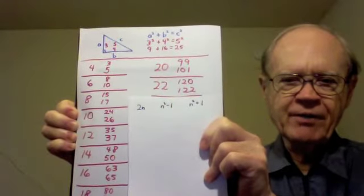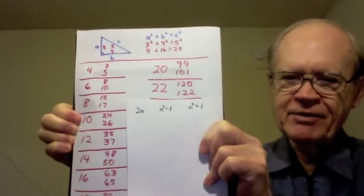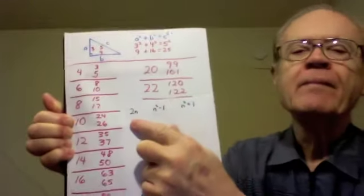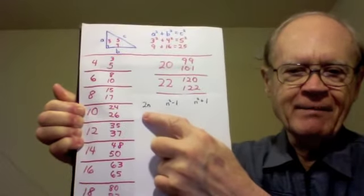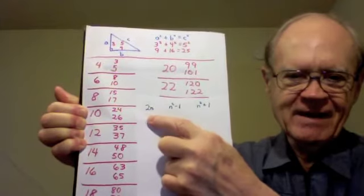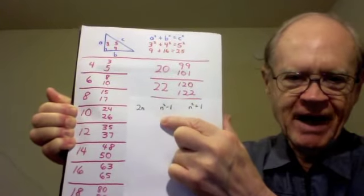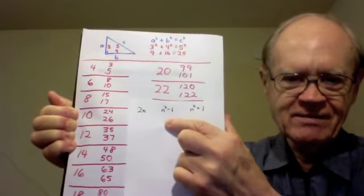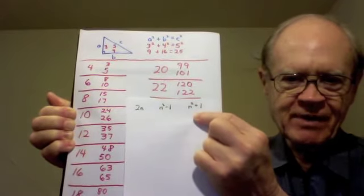So I could call the beginning even number 2n. Divide that by 2 and I get n. And so the other two numbers are n squared minus 1 and n squared plus 1.